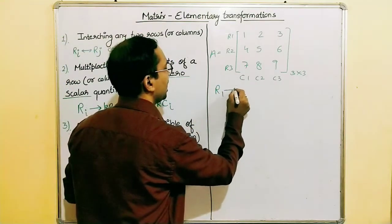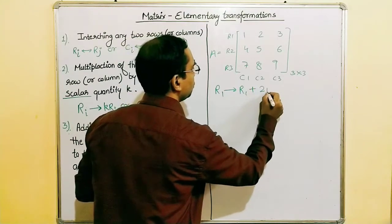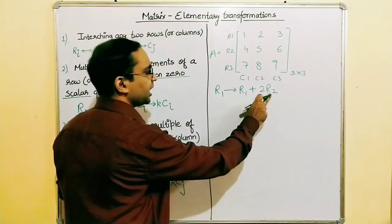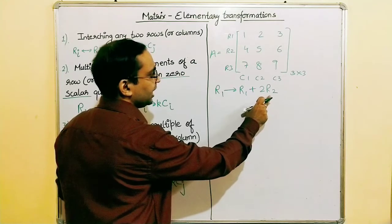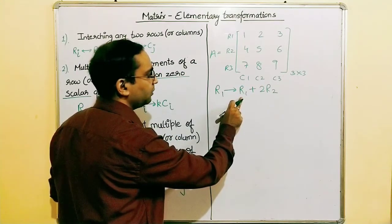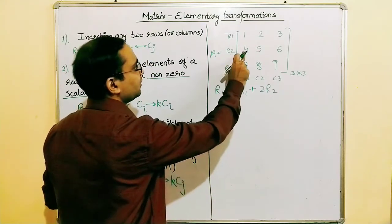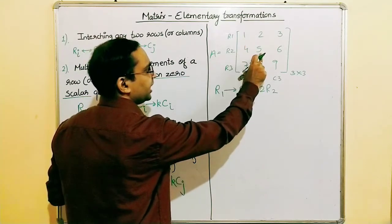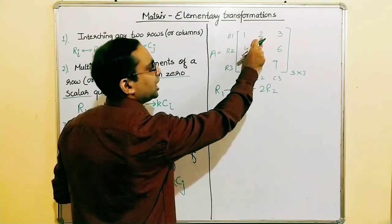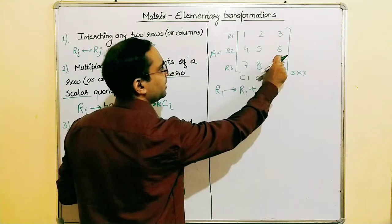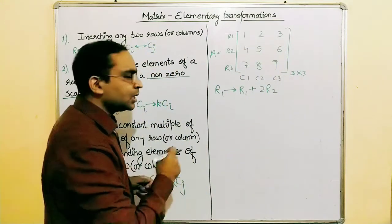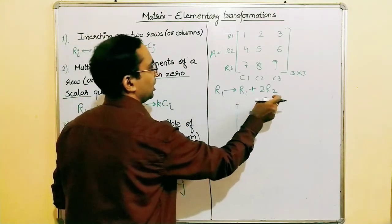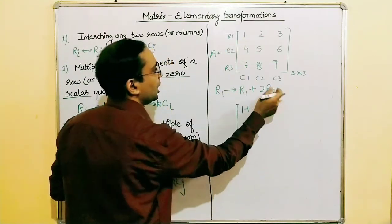Let's perform the operation R1 → R1 + 2·R2. We multiply each element of R2 by two and add it to the corresponding element of R1. The first element of R2 corresponds to the first element of R1, the second element of R2 corresponds to the second element of R1, and so on.